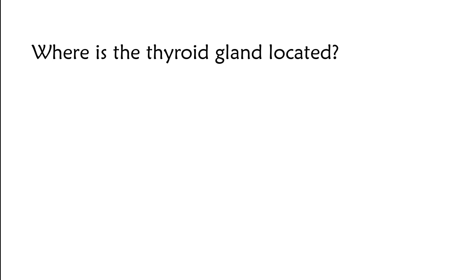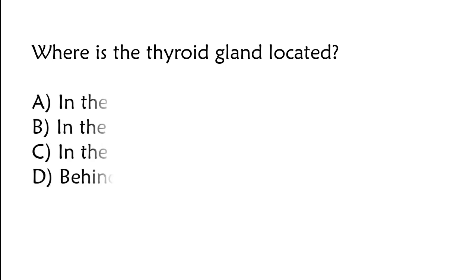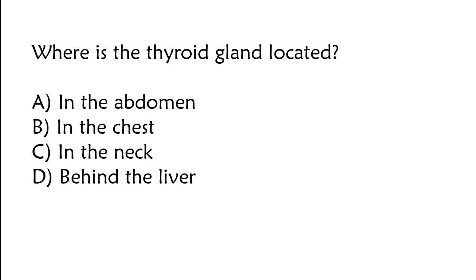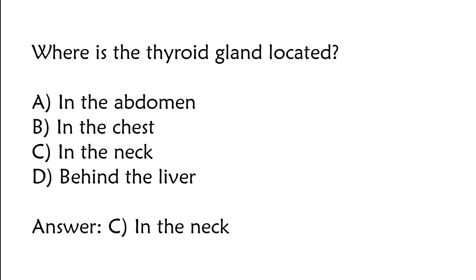Where is the thyroid gland located? In the abdomen, in the chest, in the neck, behind the liver. The correct answer is Option C: In the neck.